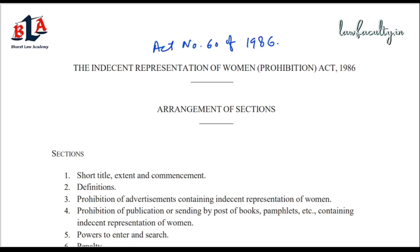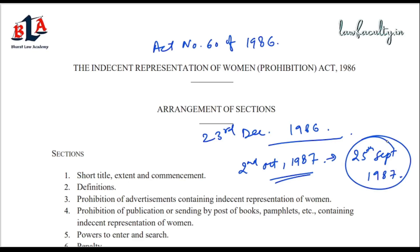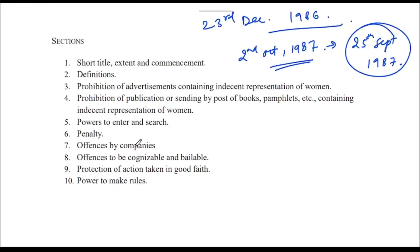It received the President's assent on 23rd December 1986. It was enforced on 2nd October 1987, and this enforcement was published in the Gazette of India on 25th September 1987. This question was asked in RJS last time — when was it published. Now, the scheme of the Act: there are 10 sections in the Indecent Representation of Women's Prohibition Act 1986.